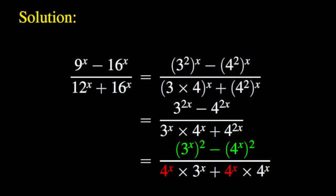We remark that on the numerator we have a difference of squares, namely 3 to the power x, squared, minus 4 to the power x, squared. Moreover, we have a common factor on the denominator: 4 to the power x.